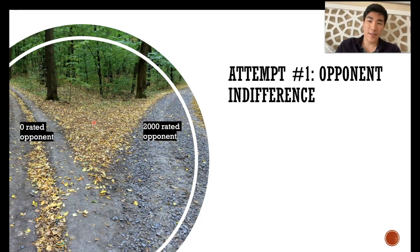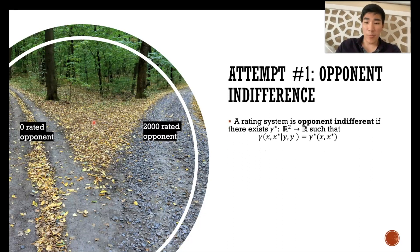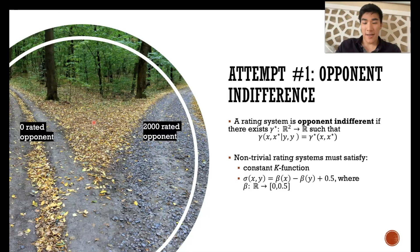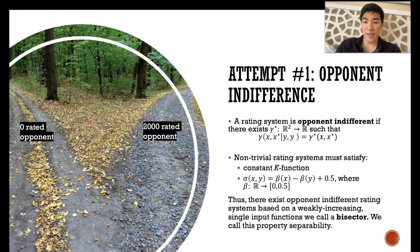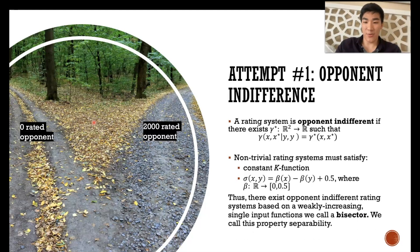Moving on, we have our first attempt at defending against opponent selection attacks, which we call opponent indifference. Formally, we say that the expected gain function when your opponent is correctly rated only depends on your true rating and current rating. We find that opponent indifference rating systems do exist and have some structure: they must have a constant K function, and they must be written in terms of a single input function we call a bisector that is weakly increasing. When the skill curve is in this form, we call it separable.